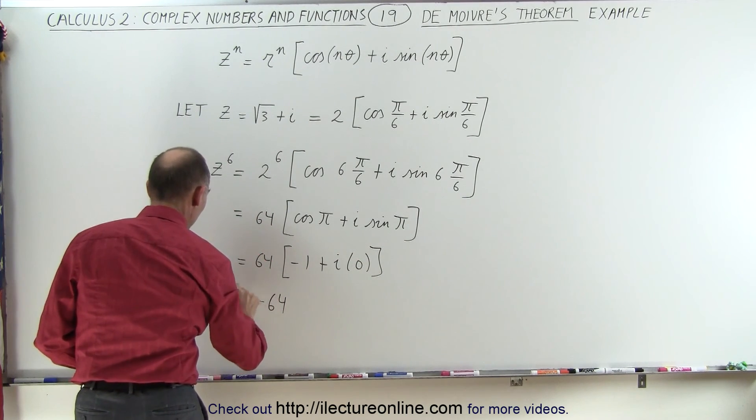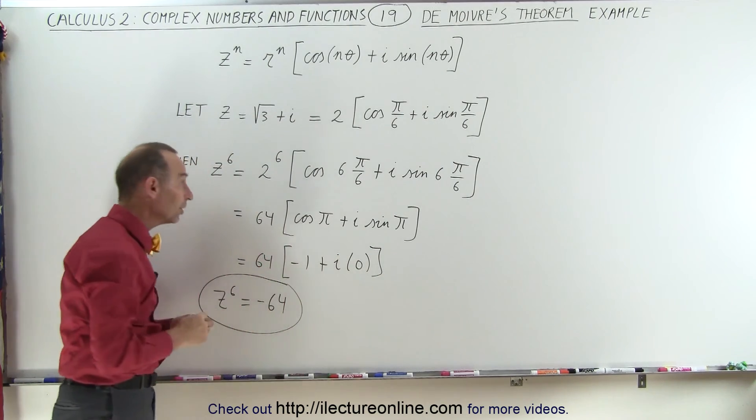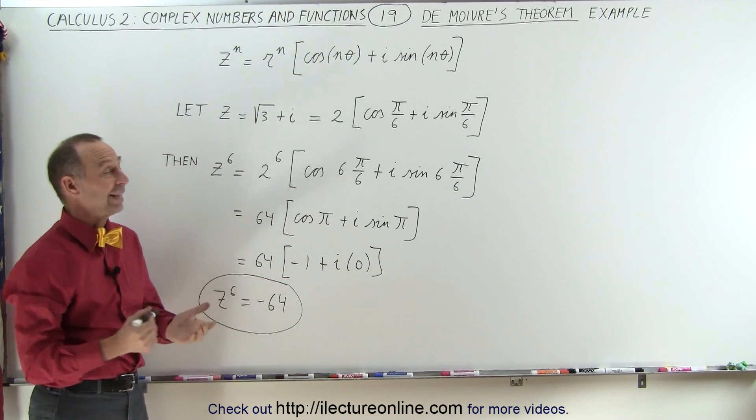So, z to the sixth power can very easily be found using De Moivre's theorem. And that's how it's done.